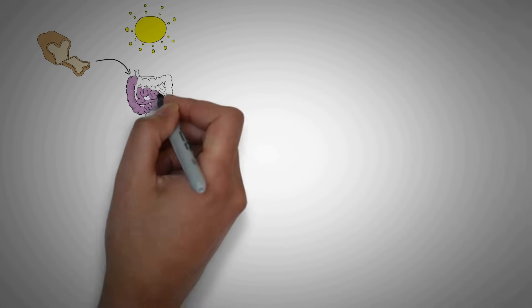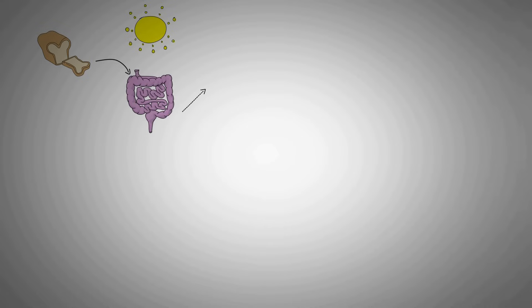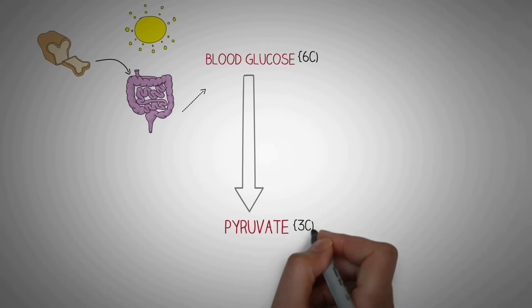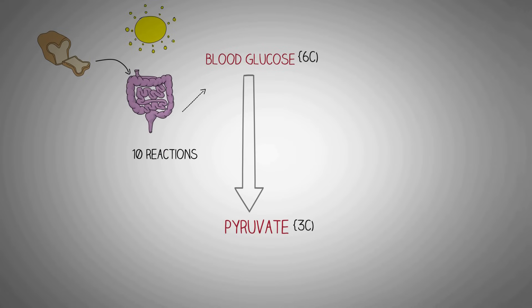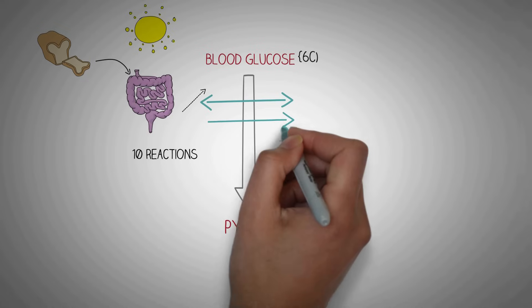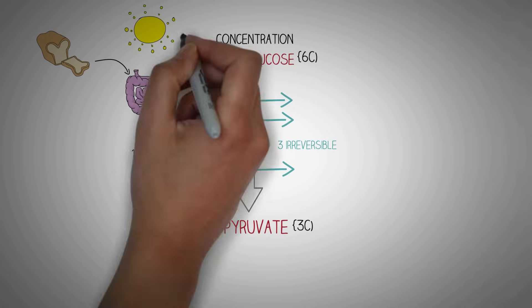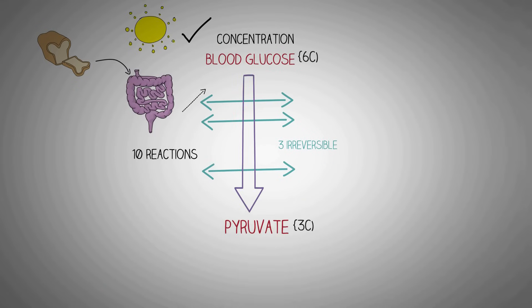We consume food in complex carbohydrate forms throughout the day, which through our intestines gets converted to glucose. Glucose is a 6-carbon compound, and as covered in glycolysis, glucose is converted to two molecules of pyruvate, which is a 3-carbon compound. This happens through a series of 10 reactions known as glycolysis, of which three reactions are irreversible.